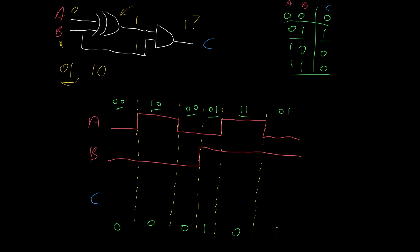All that remains is to draw the trace. C is initially 0, stays 0 after the first change, stays 0 after the second change, jumps up to 1 here, jumps back to 0 here, and finally jumps up to 1 here. And that's it — relatively straightforward.